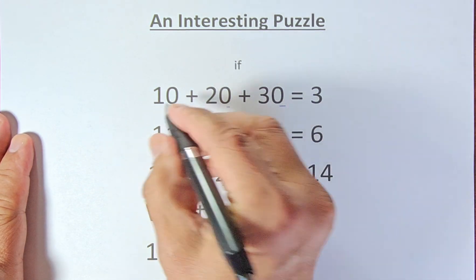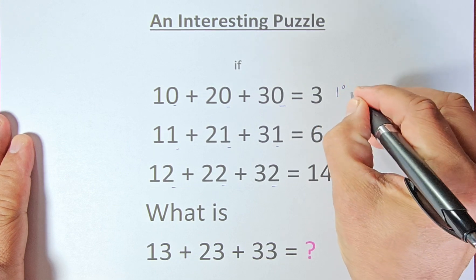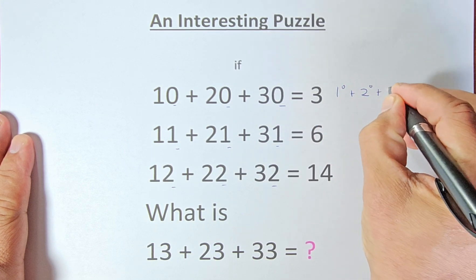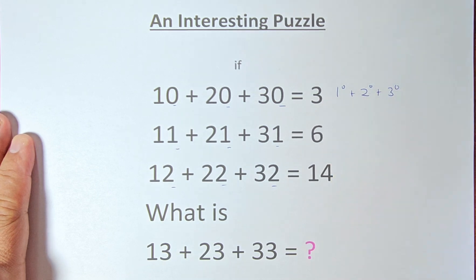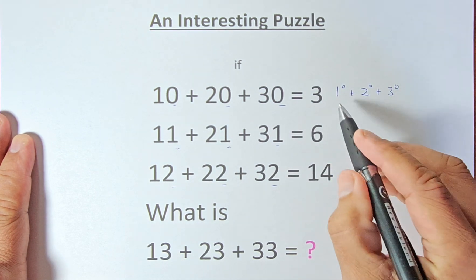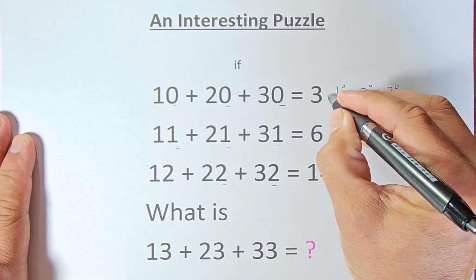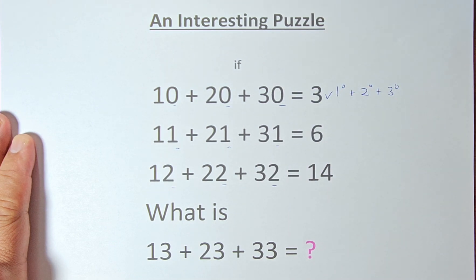All the 0's and the 1's and the 2's, they are actually the power. So 1 to the power of 0 plus 2 to the power of 0 plus 3 to the power of 0. Any number to the power of 0 is going to be 1. So 1 plus 1 plus 1, and that will give us 3.